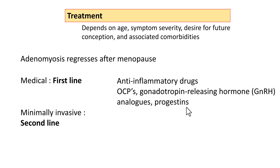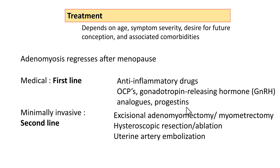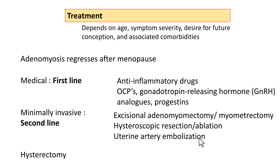The second line of treatment is minimally invasive surgeries, including excisional adenomyomectomy for larger foci. For smaller foci, you can do myometriotomy, hysteroscopic resection or ablation of adenomyotic foci, or even uterine artery embolization. If none of these work, the final option is hysterectomy.